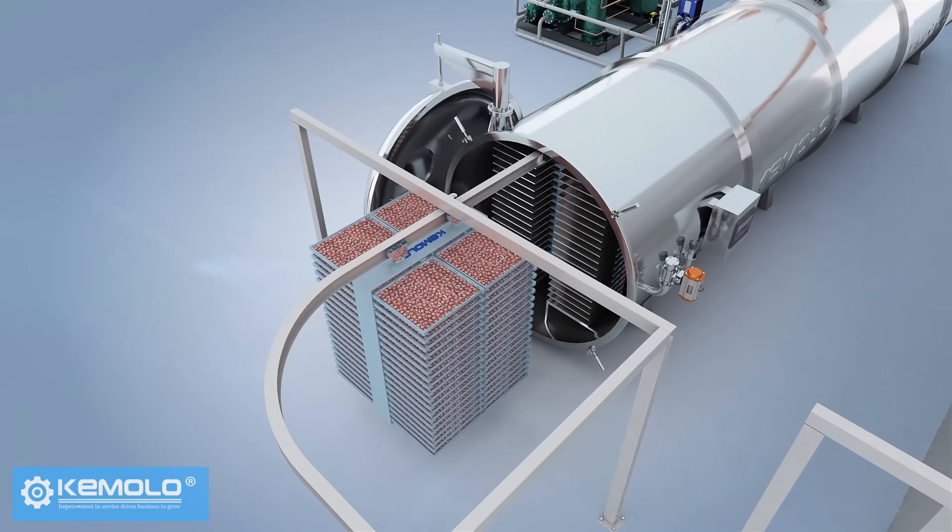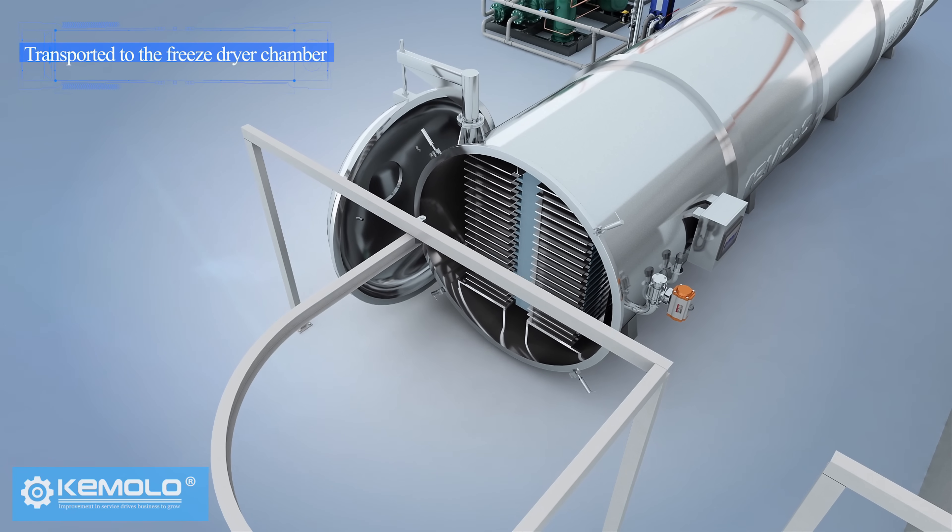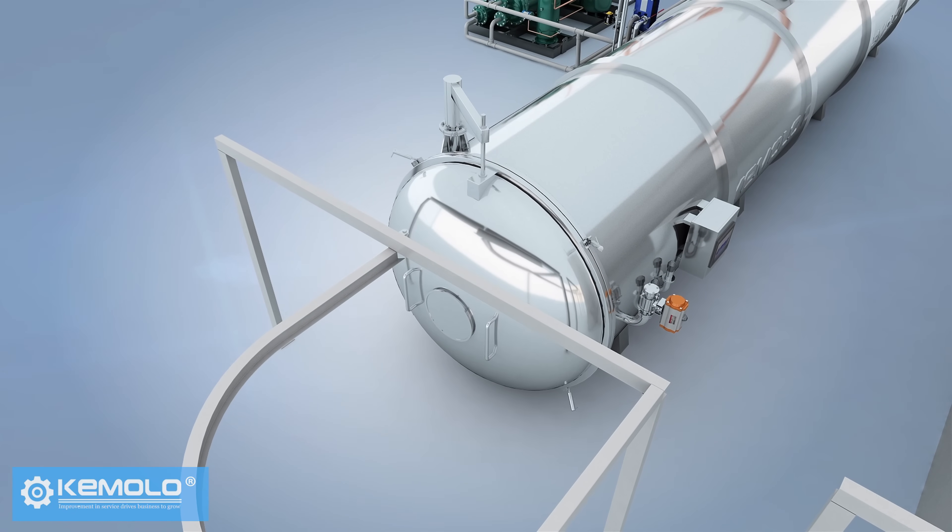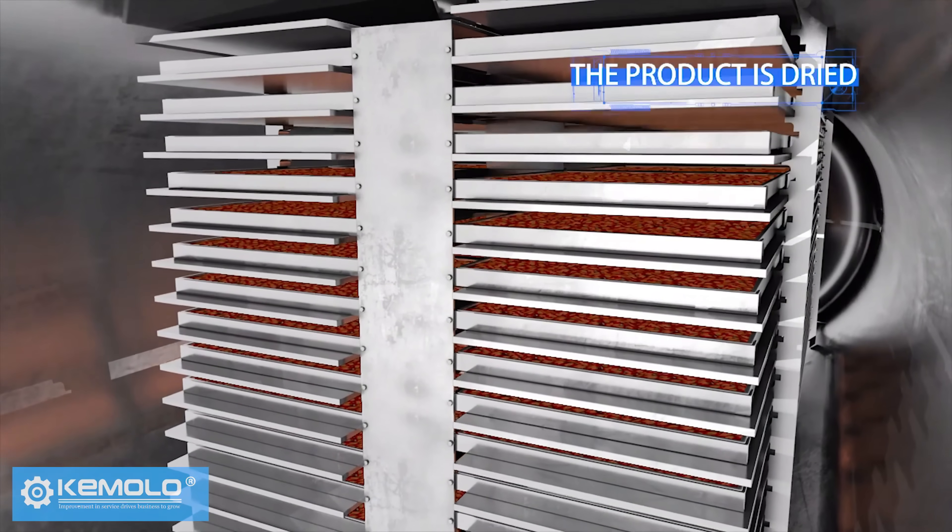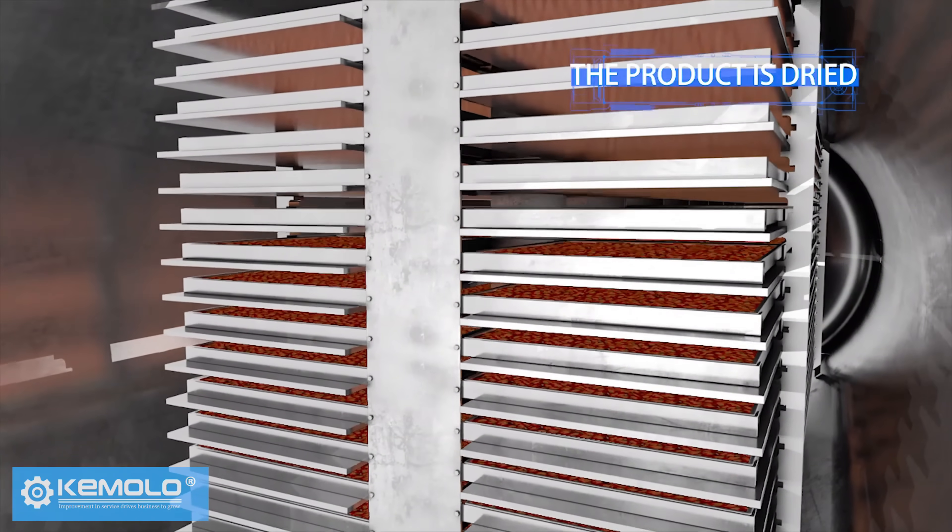The frozen material is then transported to the freeze-dryer chamber. The chamber is closed and it is ready to freeze-dry. When the material temperature reaches the set temperature, the product is dried.